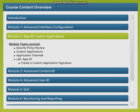Module 2: App ID, Custom Applications. In this section we will start with a quick review of the security policy and security policy rules on the firewall. We will also discuss how to identify proprietary applications running in your network using custom App IDs, and how to control applications using application overrides.